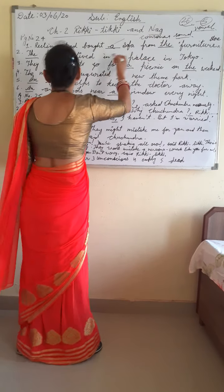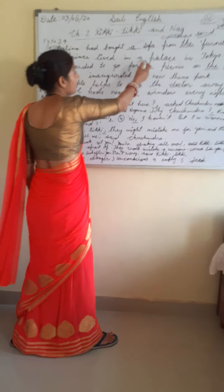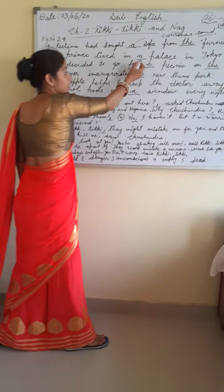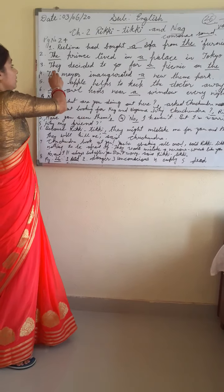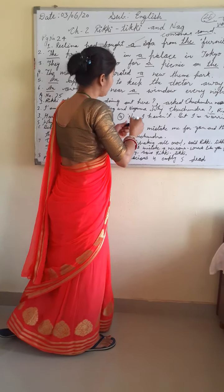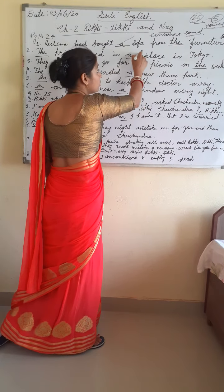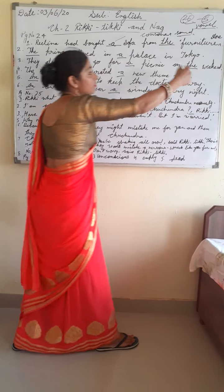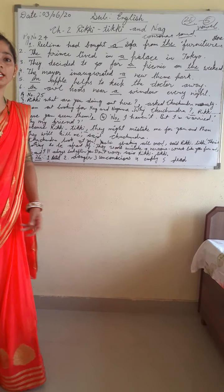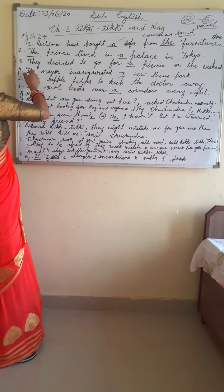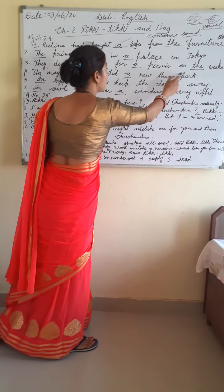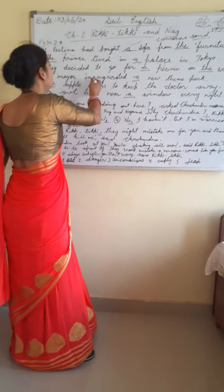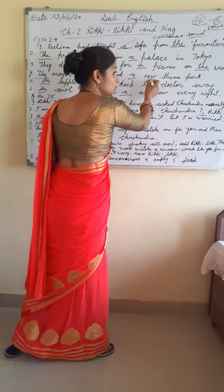Sentence 2: The prince lived in a palace in Tokyo. Here you use 'the' before prince — a specific person — and 'a' before palace. Sentence 3: They decided to go for a picnic on blank weekend — 'a picnic' because picnic has a consonant sound, and 'the weekend.' The weekend refers to the full holiday period. Sentence 4: The mayor inaugurated a new theme park. Here you use 'the' before mayor — it is a post or title — and 'a' before new, because 'new' starts with a consonant sound.